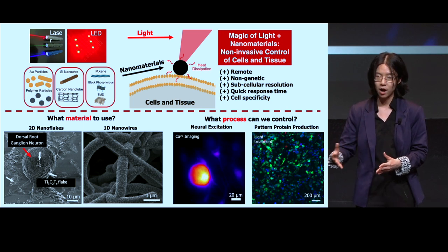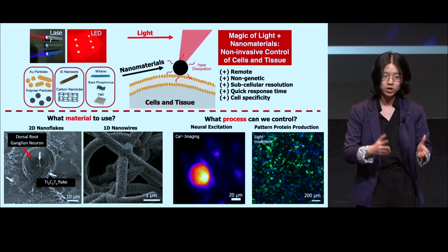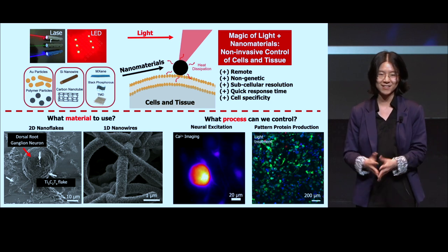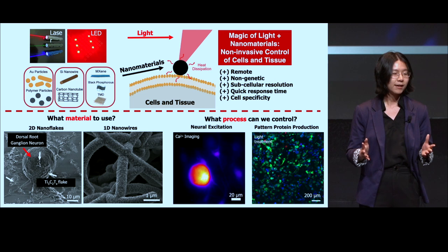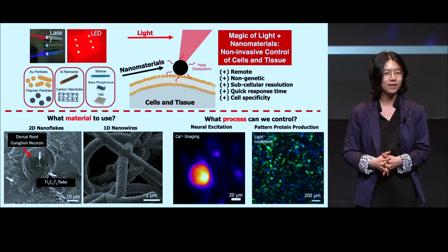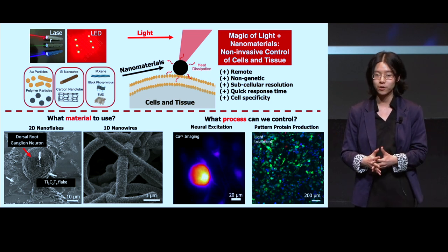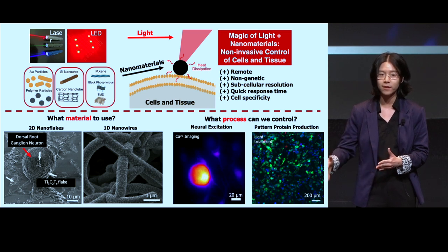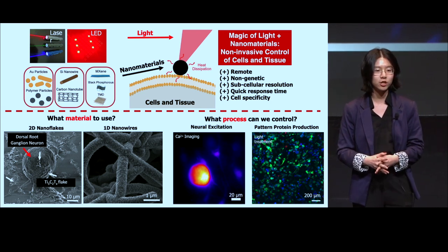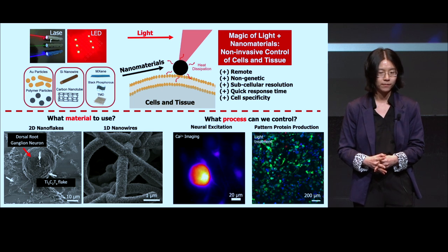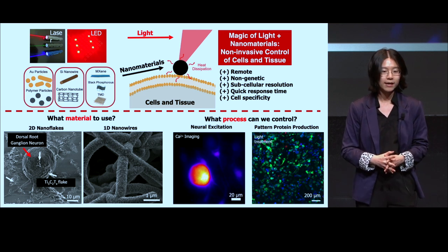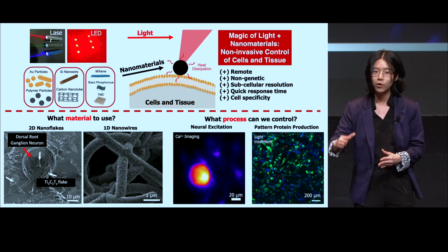What I'm working on is using a remote way to achieve this. The answer is light and nanomaterials. Light-responsive nanomaterials can convert light energy to thermal energy or electric energy. This local temperature rise or electric field can achieve modulation of cell activity. My work focuses on designing materials which can achieve high energy conversion. We observed that MXene nanoflakes and silicon nanowires can achieve high optical response with lower incident energy.